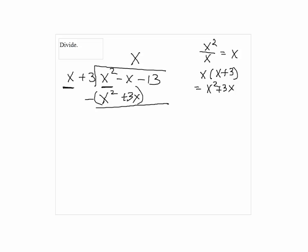And we subtract. When you subtract, make sure that the sign will change to negative. So we have 0 for the first terms. But the second term, we have negative 4X.